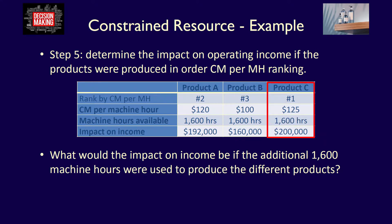For product C, $125 multiplied by 1,600 machine hours equals $200,000. You can clearly see that the total contribution margin earned with the additional 1,600 machine hours is maximized if we produce product C. That's because the contribution margin per machine hour is the highest. If there is no limit to the number of products we can sell of product C, then the company would maximize their operating income by producing only product C.